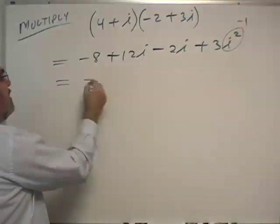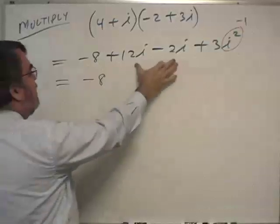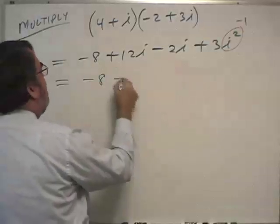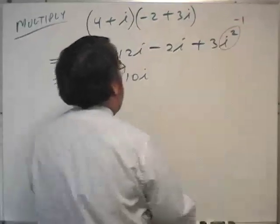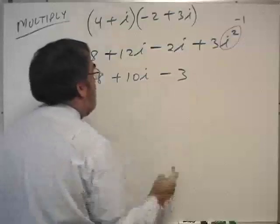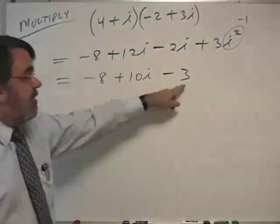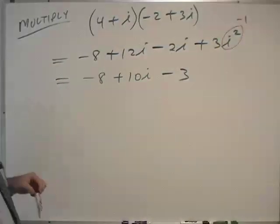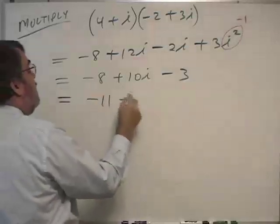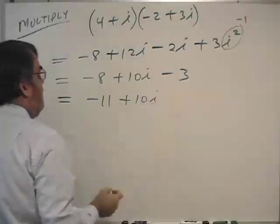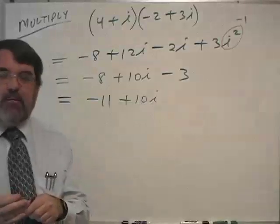So let's see, what we have is negative 8. These terms combine to make plus 10i, and then 3 times negative 1 is negative 3. So now we can also combine the two numbers here and get negative 11 plus 10i. So now it's complete, completely simplified.